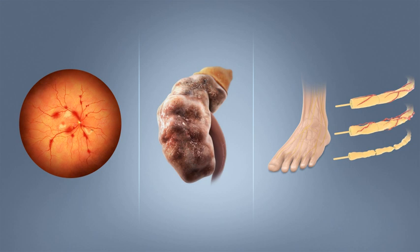Control of blood pressure and maintaining proper foot care are important for people with the disease. Type 1 DM must be managed with insulin injections. Type 2 DM may be treated with medications with or without insulin. Insulin and some oral medications can cause low blood sugar. Weight loss surgery in those with obesity is sometimes an effective measure in those with type 2 DM. Gestational diabetes usually resolves after the birth of the baby.